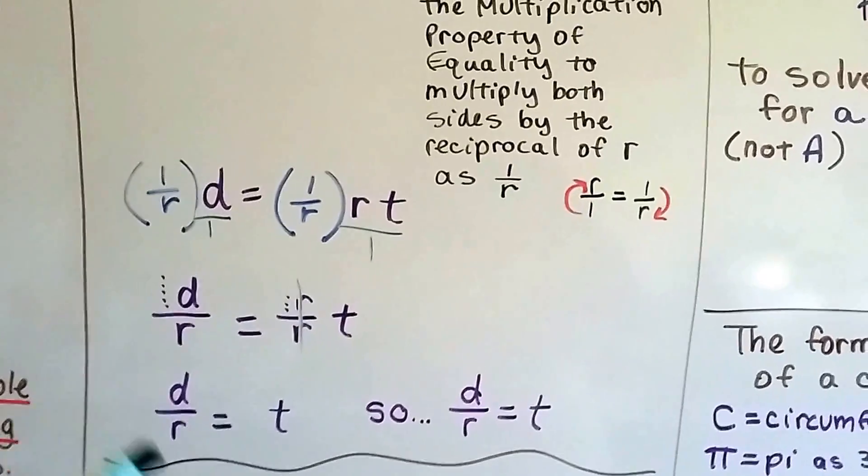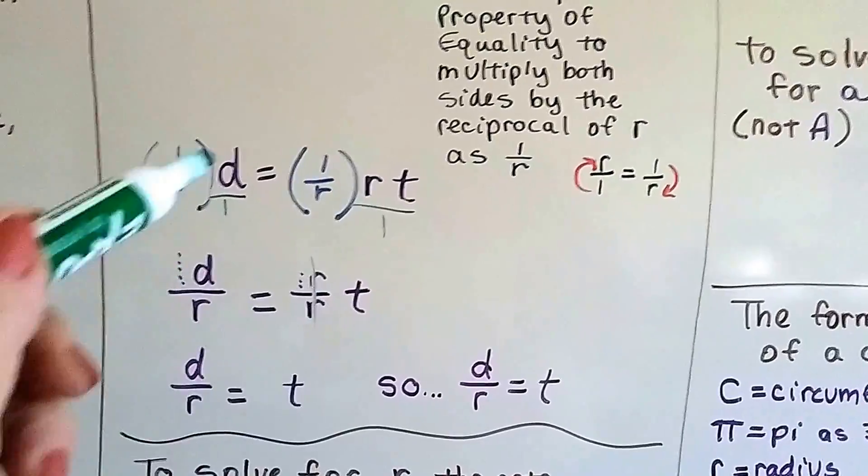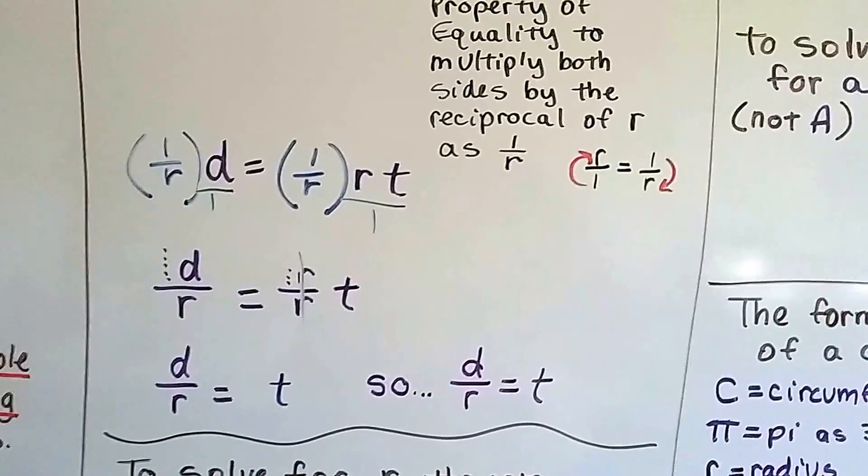So now we end up with the distance divided by the rate is going to equal our time. If we wanted to find out the time, now we can do it using this formula, because now it's not solving for d, it's solving for t, time.